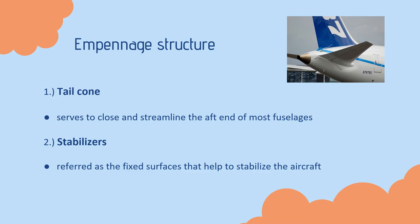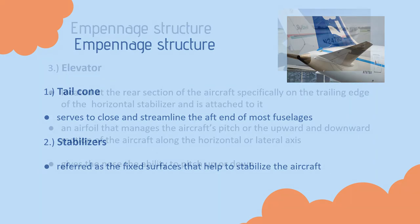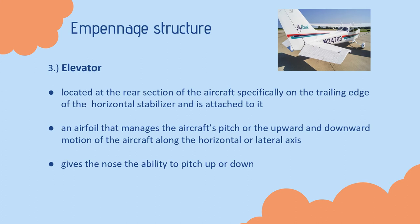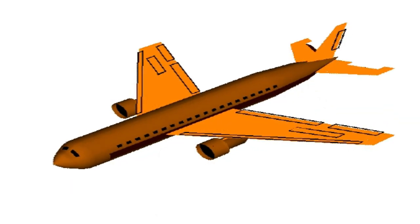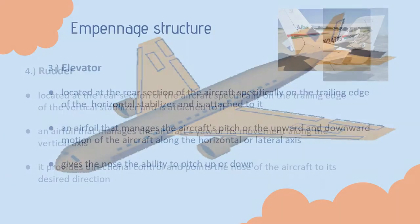Stabilizers are referred to as the fixed surfaces that help to stabilize the aircraft. Third is the elevator. The elevator is located at the rear section of the aircraft, specifically on the trailing edge of the horizontal stabilizer and is attached to it. It is an airfoil that manages the aircraft's pitch, or the upward and downward motion along the horizontal or lateral axis, giving the nose the ability to pitch up or down.